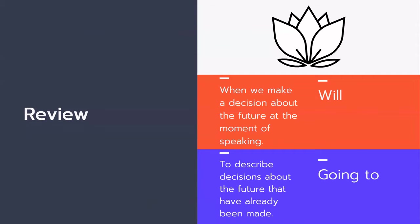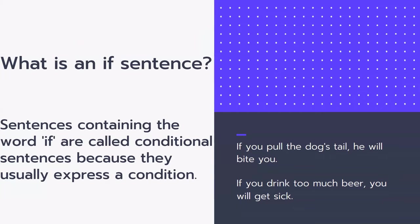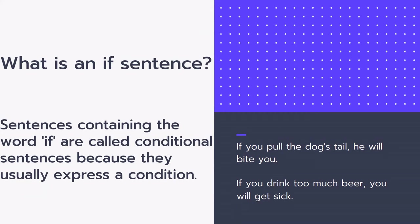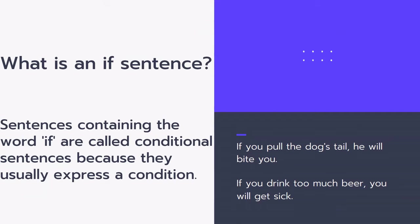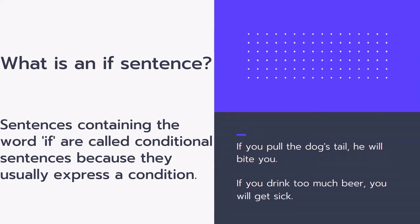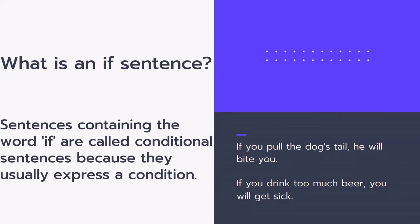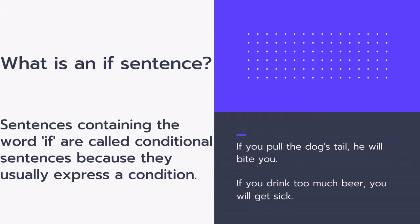Before we go on, we have to discuss what is an 'if sentence.' Sentences containing the word 'if' are called conditional sentences because they usually express a condition. Conditionals are a whole other grammar point, but for now, just remember: an if sentence has two parts. 'If you pull the dog's tail' — that's called the if clause. 'He will bite you' — that's called the main clause. For example: 'If you drink too much beer, you will get sick.'